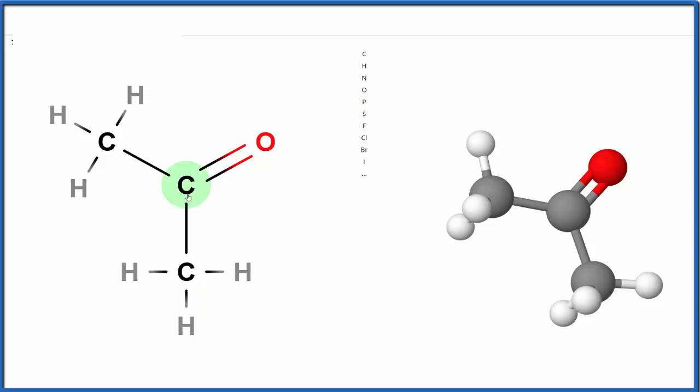So we have our structure here, our Lewis structure, or in this case, our structural formula. And we know that this acetone is a ketone because we have a carbon double bonded to an oxygen, and then we have carbons on either side.